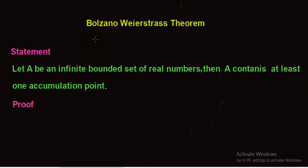Welcome students. Our today's topic is the Bolzano-Weierstrass theorem. The theorem states that if A is an infinite bounded set of real numbers, then A contains at least one accumulation point. That is, every infinite and bounded set has at least one limit point or accumulation point.